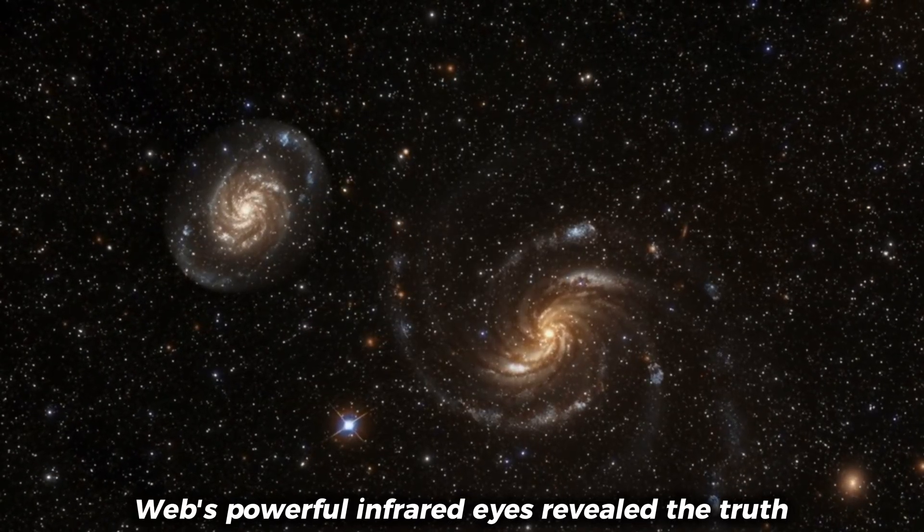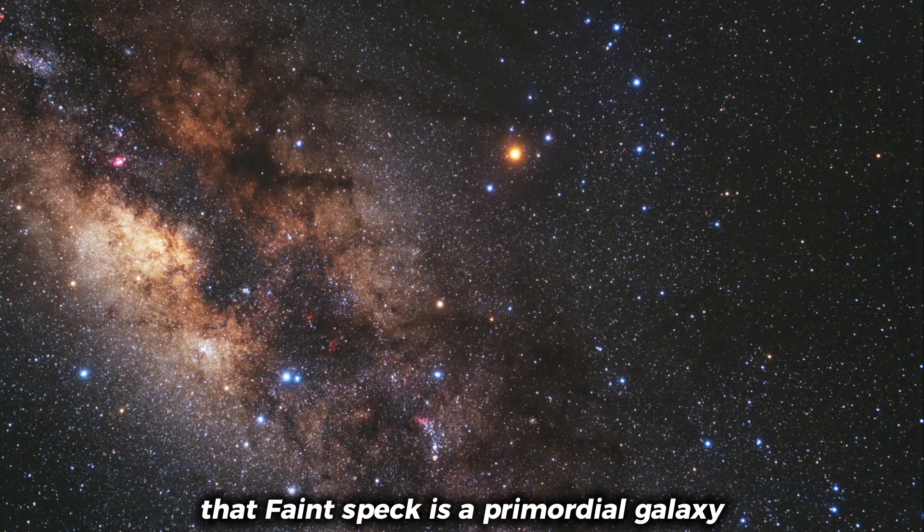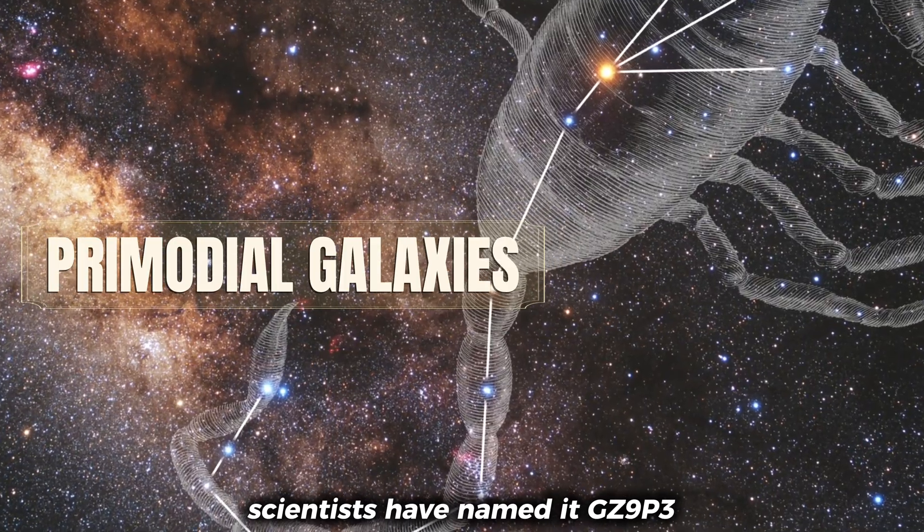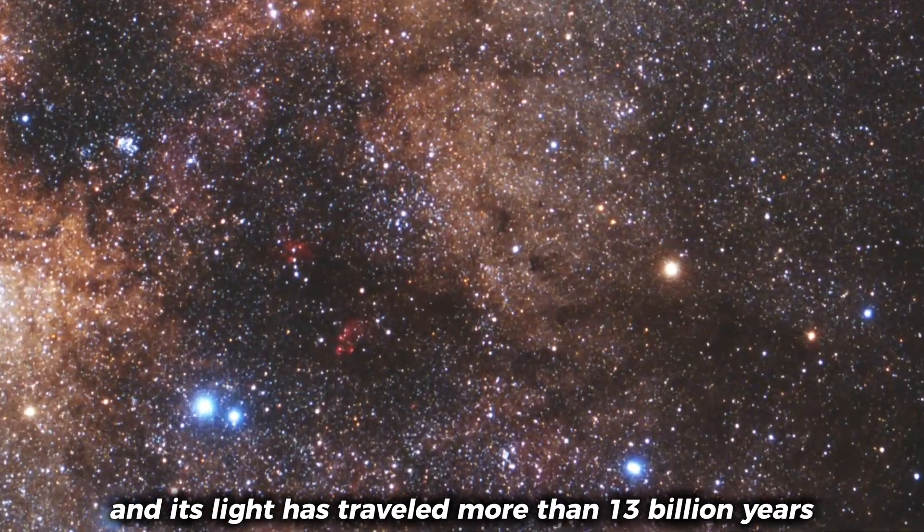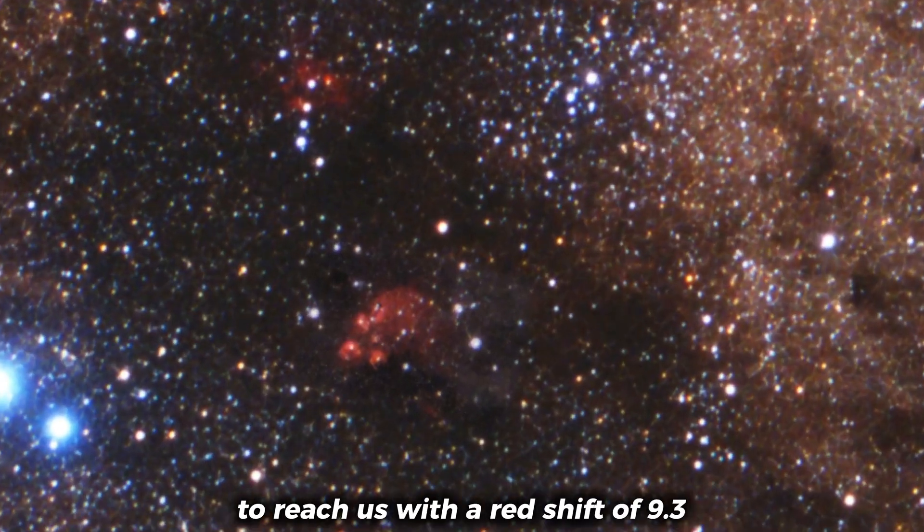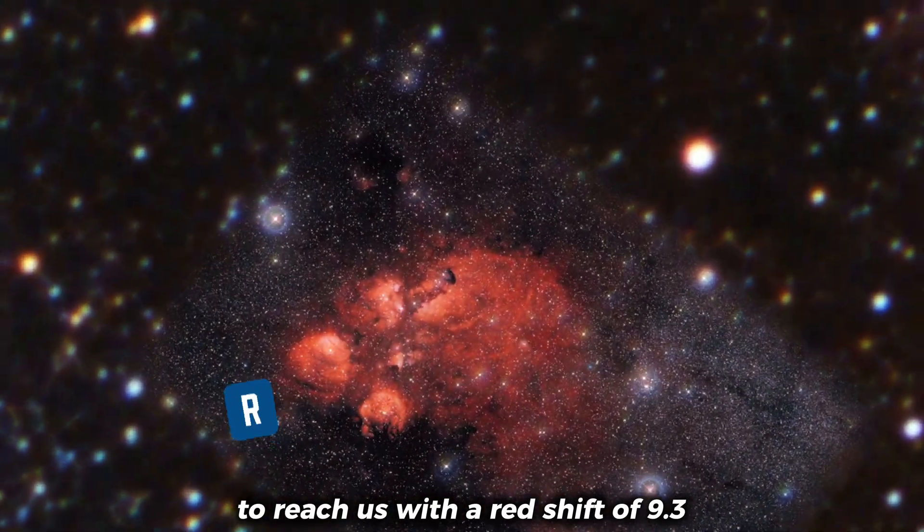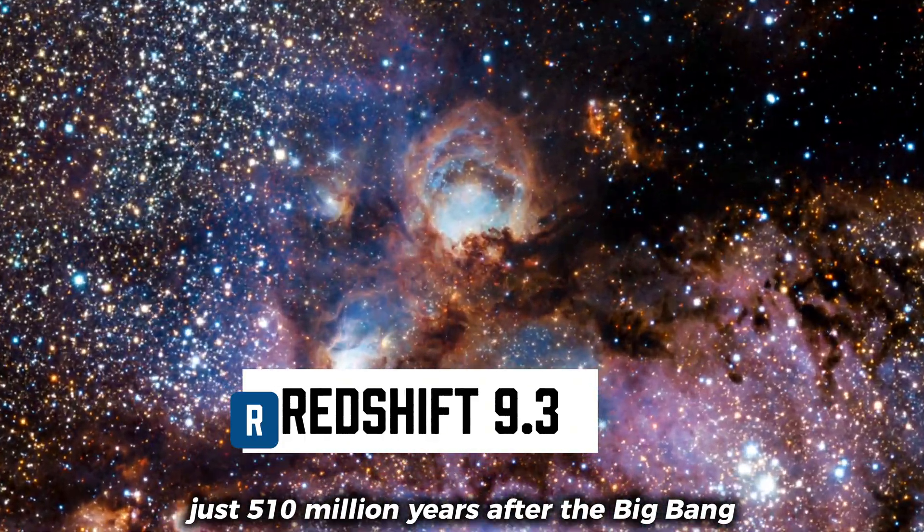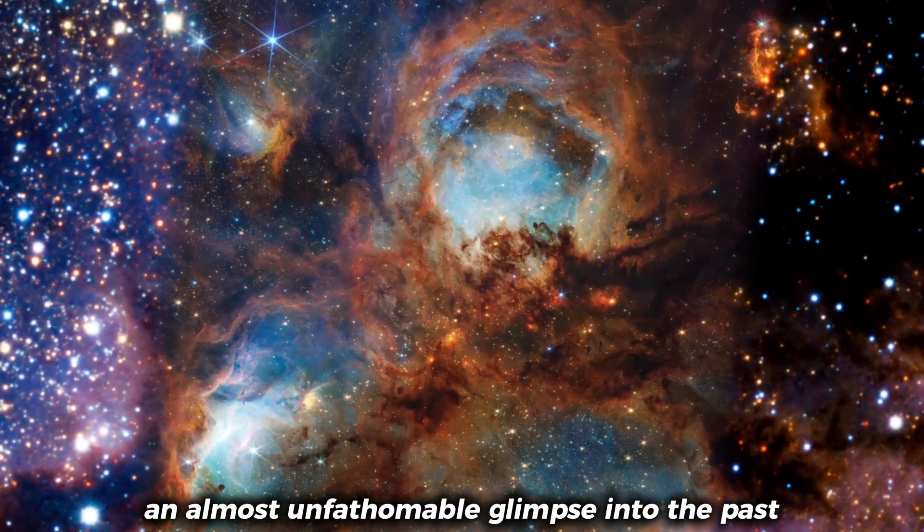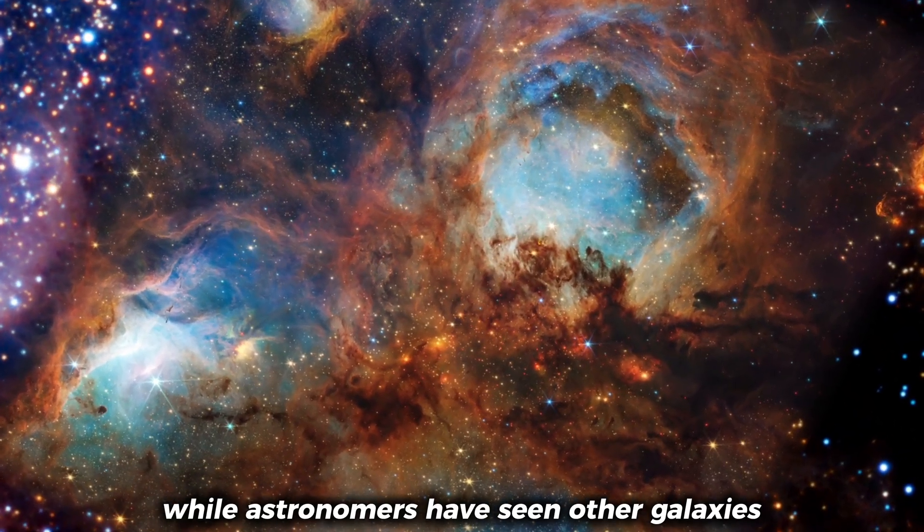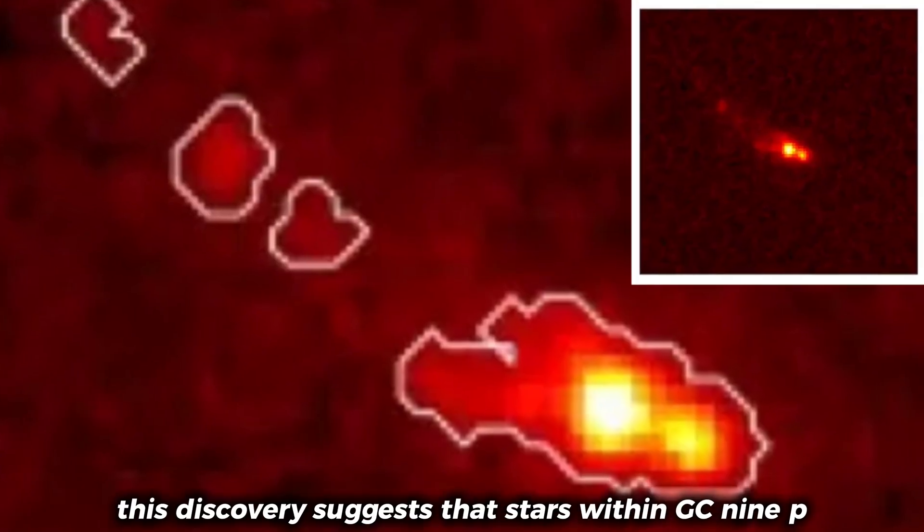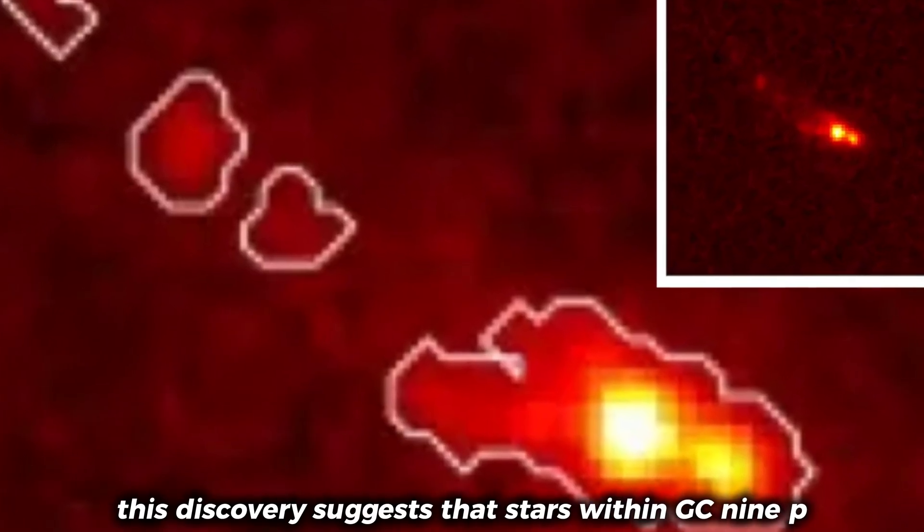Webb's powerful infrared eyes revealed the truth. That faint speck is a primordial galaxy, astonishingly large and mature for its age. Scientists have named it GZ9P3, and its light has traveled more than 13 billion years to reach us. With a redshift of 9.3, we're witnessing it as it existed just 510 million years after the Big Bang, an almost unfathomable glimpse into the past. While astronomers have seen other galaxies from this early period, none come close to the massive scale of GZ9P3.